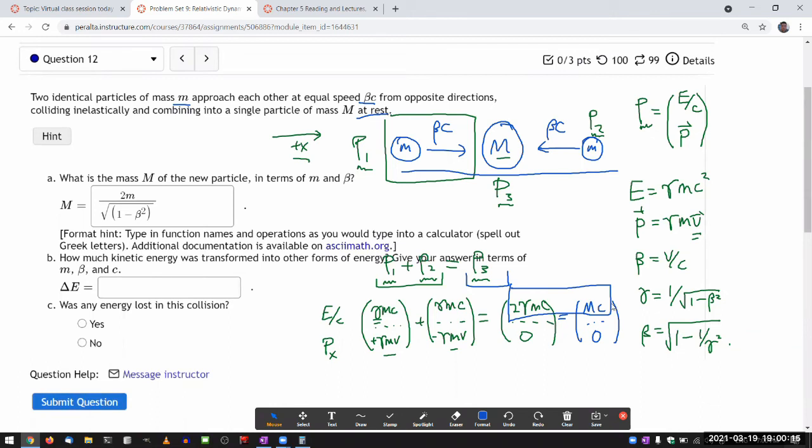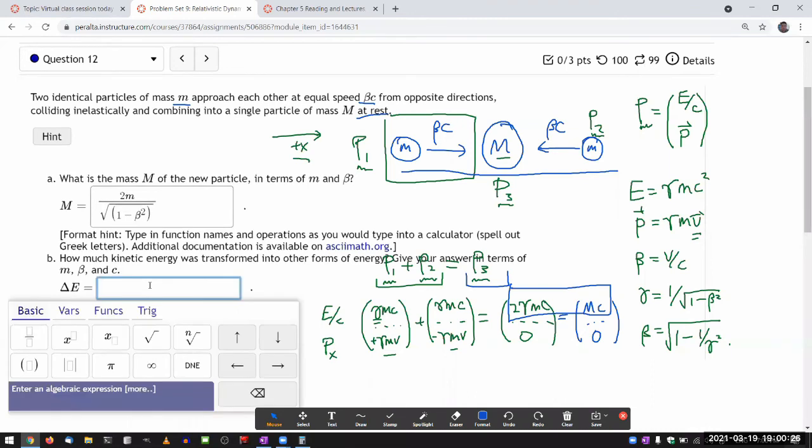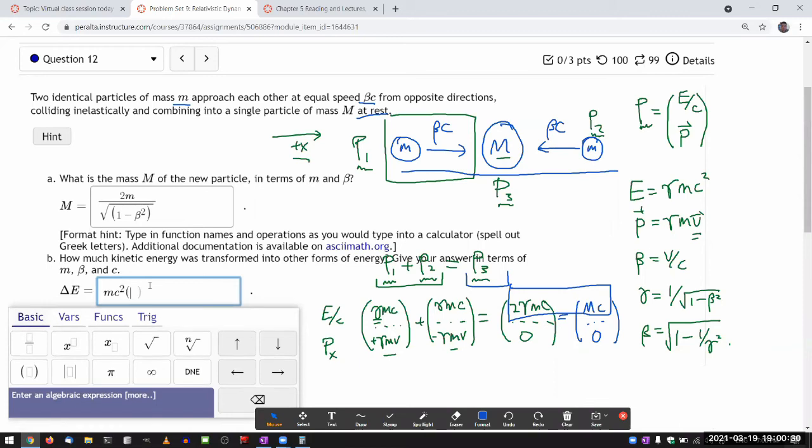So what it's asking for in a kind of roundabout way is what is the difference between the rest energy here and the rest energy here. So it'll be this quantity times c squared minus mc squared. So I guess I can factor out mc squared.